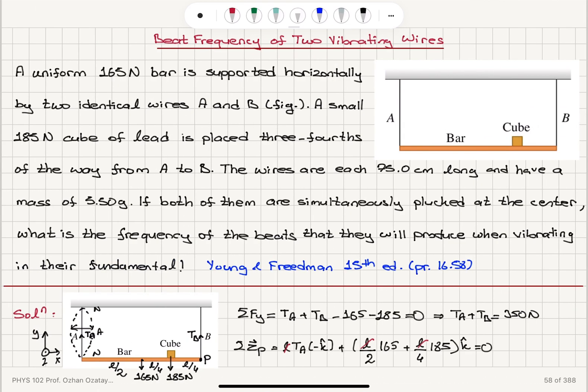Okay. So we were given two vibrating wires. They are identical wires A and B. They are attached to a bar, uniform bar, which carries a cube 3 fourths of the way from wire A. The mass and length of these wires are given. Therefore mass per unit length is given. We pluck them at the same time at their center so that they oscillate in the fundamental mode. So we will have both of them oscillating in their fundamental mode, which is node-anti-node-node because that's the boundary condition.